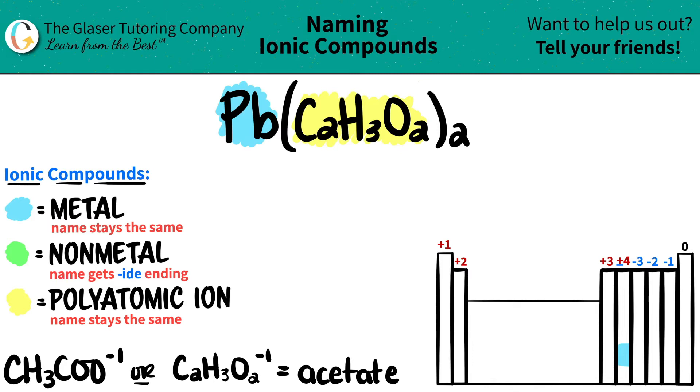Now let's just start naming. The metal name always stays exactly the same. So Pb, which was lead, that's just going to stay lead. And then this polyatomic, C2H3O2, that name stays the same. And that name of the polyatomic is acetate. So I'm just going to leave it as acetate.